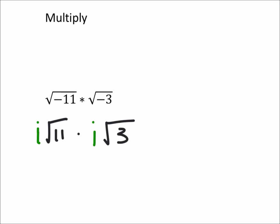Yeah, so let's multiply these now. So I have i, I'm just going to rearrange these right now. I know not everyone needs it. So I got i times i times the square root of 11 times the square root of 3. This gives me i squared times the square root of 33.